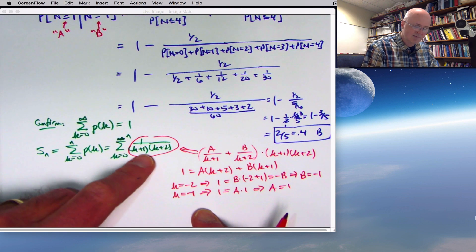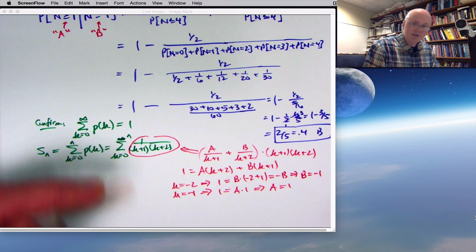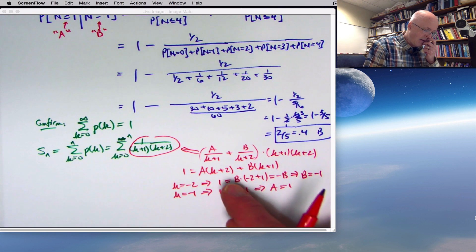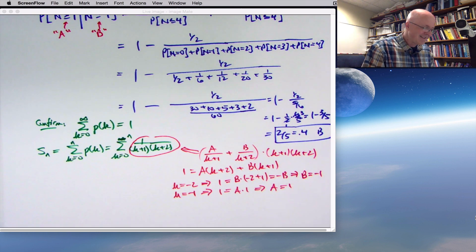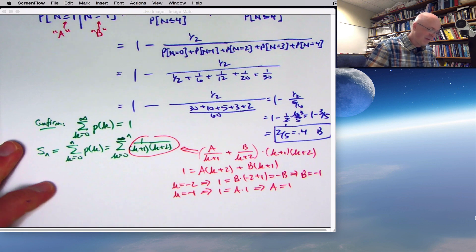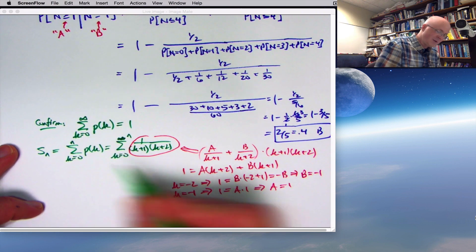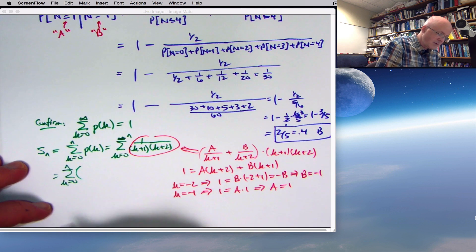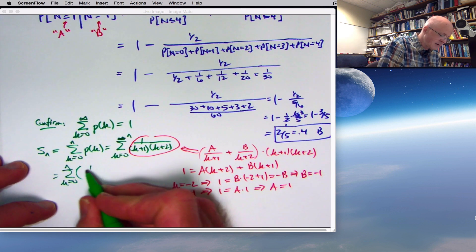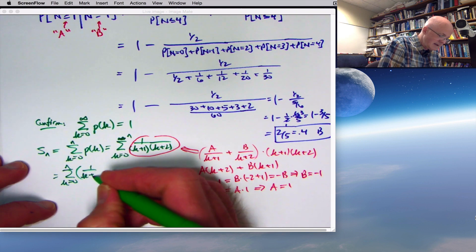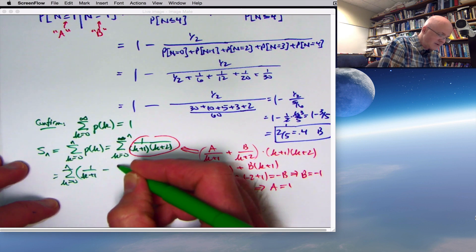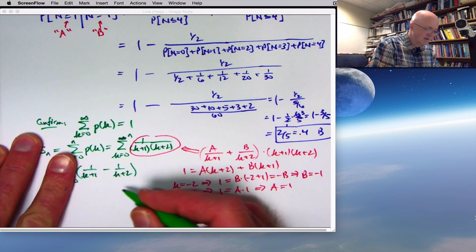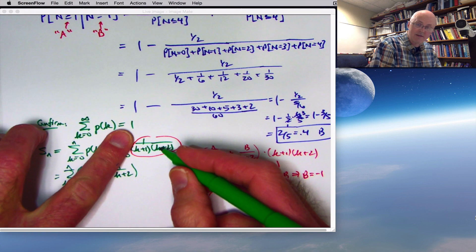But you can check it works. I'll leave that to you to check that when you combine, let me write it this way here. When you write a is 1 and b is negative 1 and write this, that 1 over k plus 1 minus 1 over k plus 2, if you subtract those fractions by getting a common denominator, ignore the summation sign here, you'll get this thing here. You can check that on your own. Now, this may not seem like it's necessarily helpful, but it is. This becomes what's called a telescoping sum.